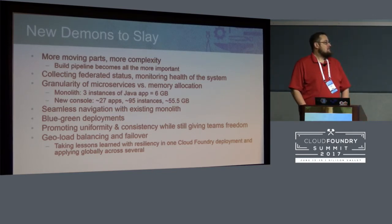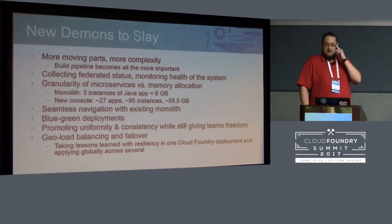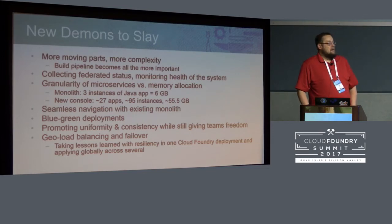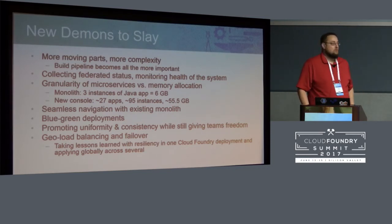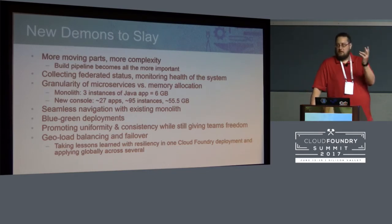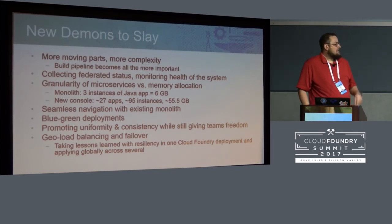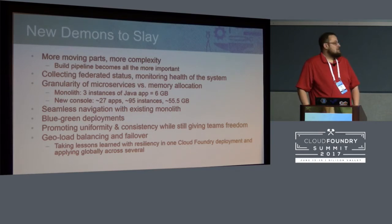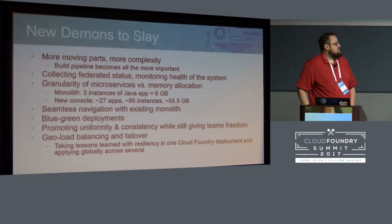We quickly developed some monitoring tools to help point the problem at the right team. The granularity of microservices and memory allocation was also a concern — the previous talk mentioned 512 megabytes being good for a Node.js app. When we had the monolith, we had three or four instances at two gigabytes each for Java — about six gigabytes total. With about 27 microservices and three to five instances each, at one point we had about 95 total instances at 512 megabytes or higher.